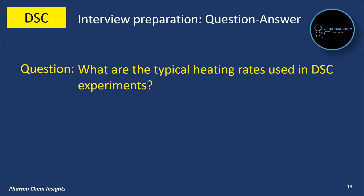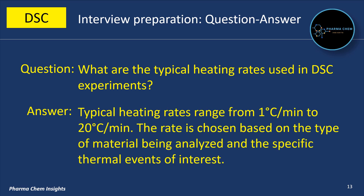Next question: What are the typical heating rates used in DSC experiments? Typical heating rates range from 1°C per minute to 20°C per minute. The rate is chosen based on the type of material being analyzed and the specific thermal events of interest.